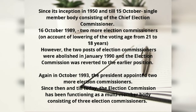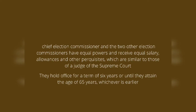The two additional Election Commissioners were abolished in January 1990. In January 1993, Election Commissioners were again added, making this a multi-member commission. All members have equal power and receive equal salary, allowances, and other prerequisites. This salary is similar to that of a Supreme Court judge.